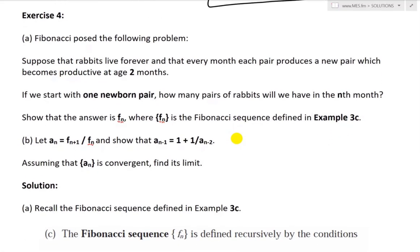Part B states: let A_n equal F_{n+1} divided by F_n, and show that A_{n-1} equals 1 plus 1 divided by A_{n-2}. And assuming that A_n is convergent, find its limit.